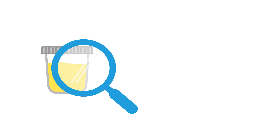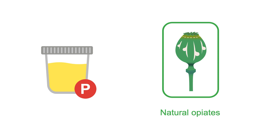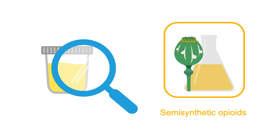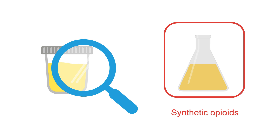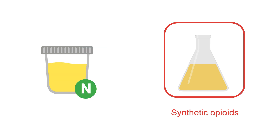When you order an opiate screen, you're only going to detect natural opiates. Rarely, if a patient is on a very high dose of a semisynthetic opioid like oxycodone, you may trigger the opiate screen, since these semisynthetic substances are at least structurally similar to opiates. The synthetic opioids, however, will never trigger an opiate screen. If you want to detect them, you need to ensure your urine toxicology screen specifically looks for each of those substances.